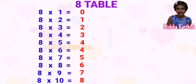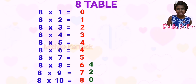Next, we write the even numbers 0 to 8 from bottom to top: 0, 2, 4, 6, 8. Once we reach 8 again, we repeat the even numbers from 0 to 8: 0, 2, 4, 6, 8.